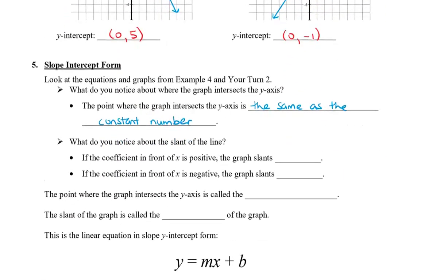So if the coefficient in front of the x is positive, the graph slants up. And if the coefficient in front of x is negative, the graph slants down.